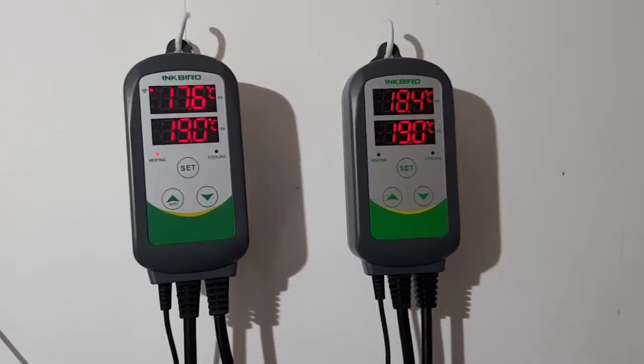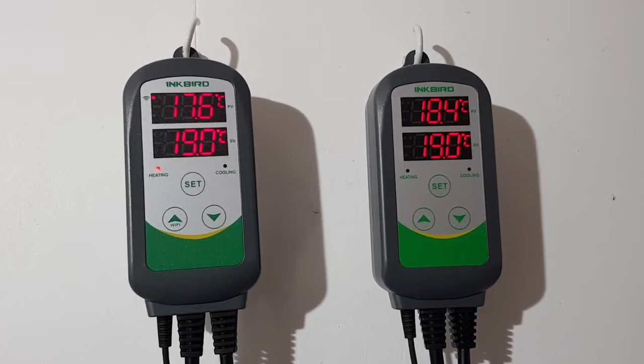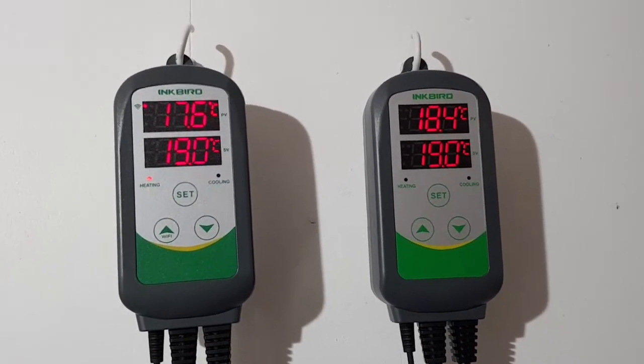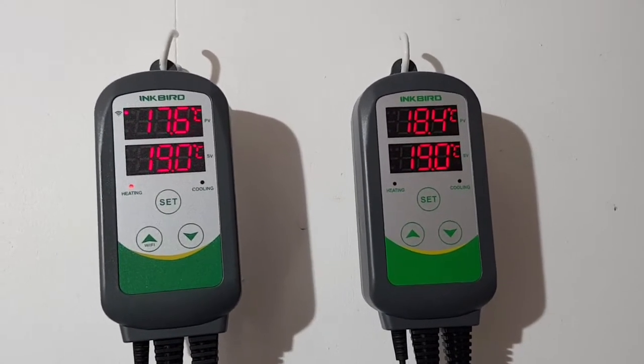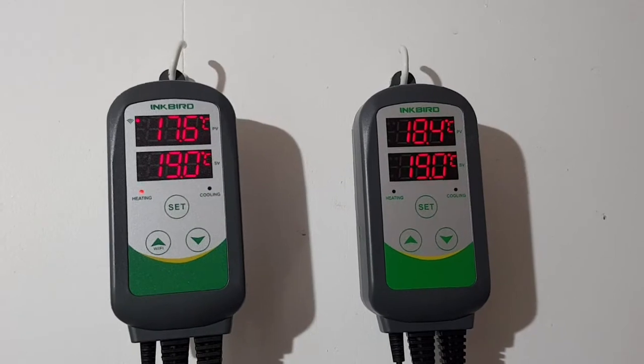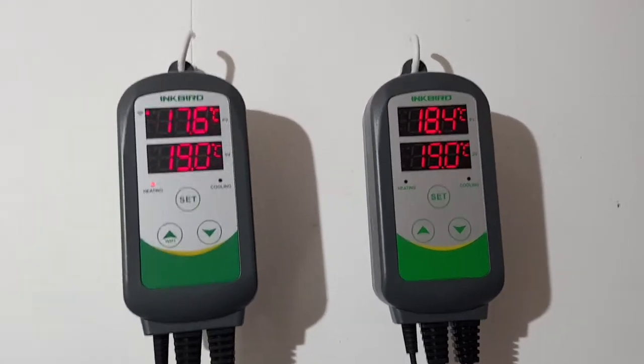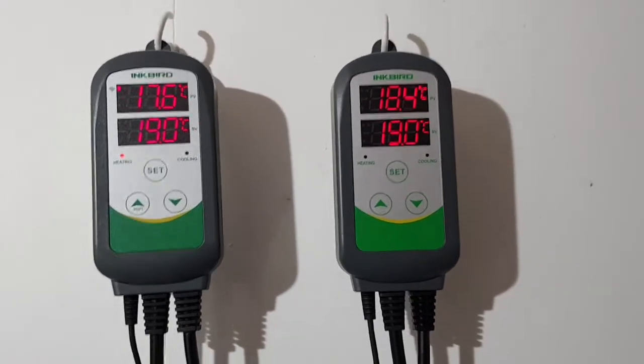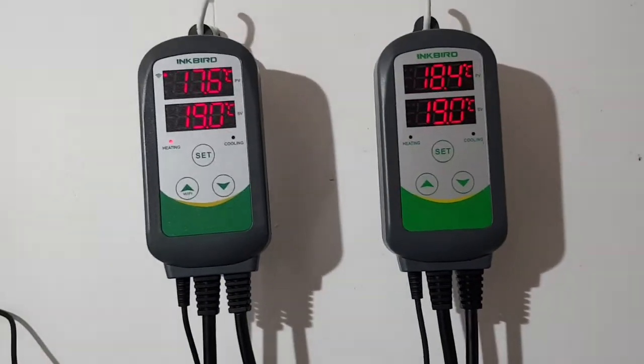Okay, that's stabilized now and the calibration on both is different. 17.6 and 18.4 is 0.8 of a degree. If I had set the temperatures to be 18 degrees, this would be down to 17.2. Anything below 18 degrees can tend to mess around with the yeast a little bit. So it's important.